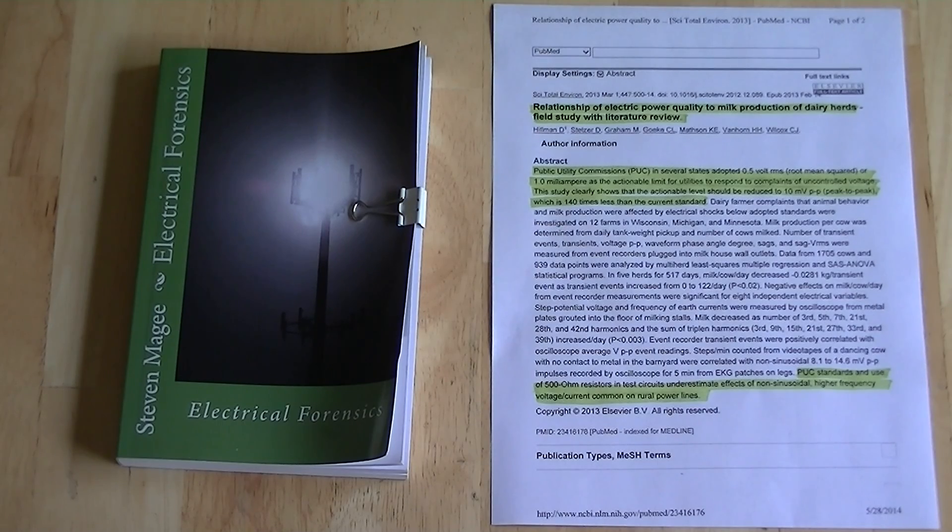This study clearly shows that the actionable level should be reduced to 10 millivolts peak to peak, which is 140 times less than the current standard.